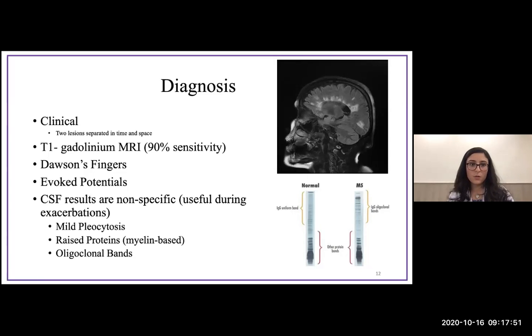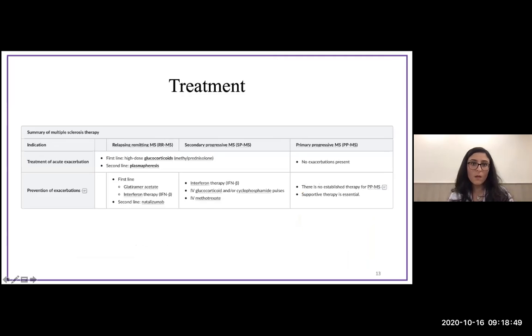To diagnose a patient with multiple sclerosis, we need clinical diagnosis—history and physical exam are the mainstay. Nowadays, with MRI, T1 gadolinium MRI is 90% sensitive. There are Dawson's fingers seen on MRI—plaques that form around the ventricle in the veins, looking like finger-like projections. Evoked potentials show slowing of nerve fiber conduction. CSF results are usually non-specific; we'd rather measure them during an exacerbation. These patients have mild pleocytosis or lymphocytosis, raised myelin-based proteins from myelin destruction, and oligoclonal bands. As you can see here, in MS patients, you have an exacerbation of IgG bands—many lines.